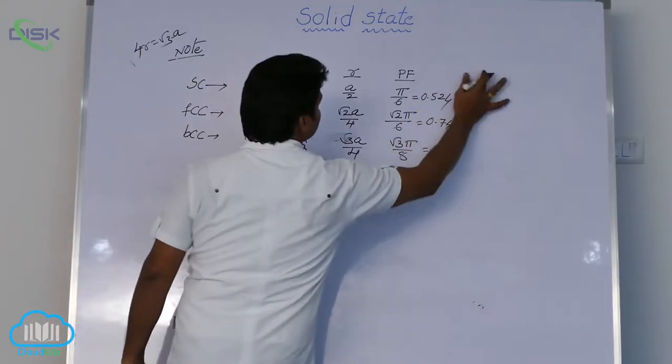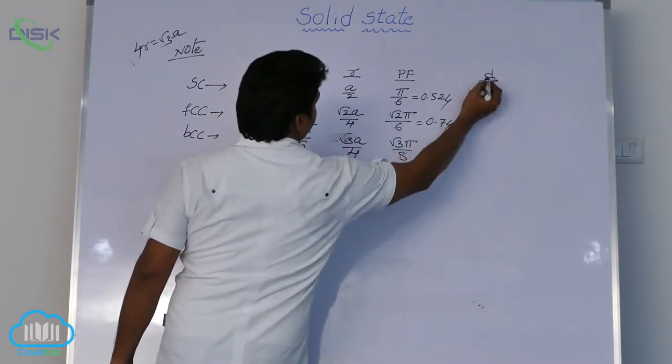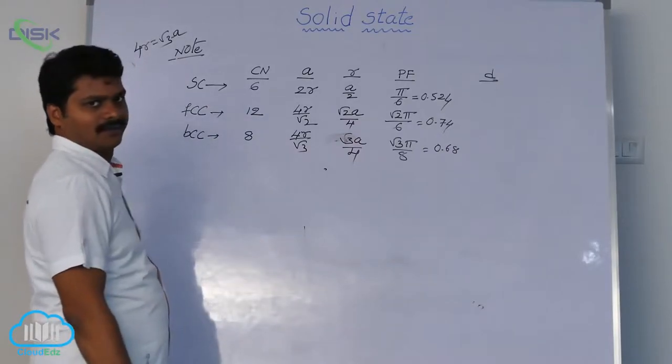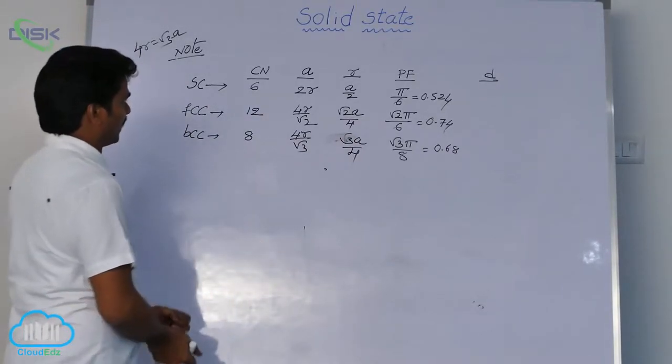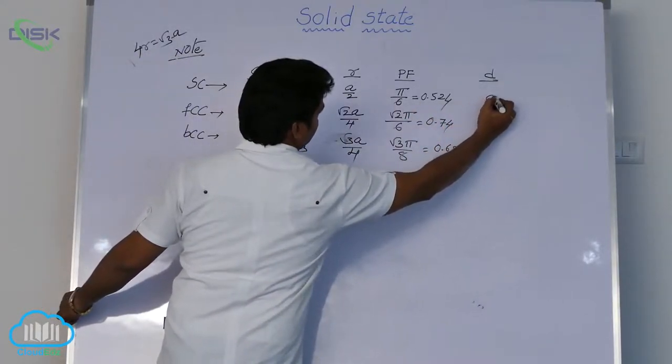Next, what is nearest neighbor's distance d? Nearest neighbor's distance. For simple cubic, nearest neighbor's distance means 2r, which means edge length a.